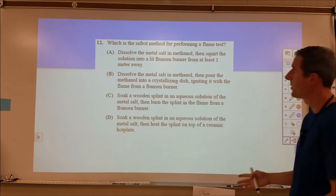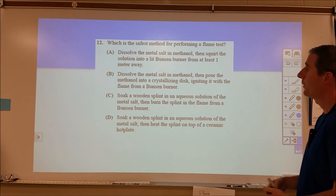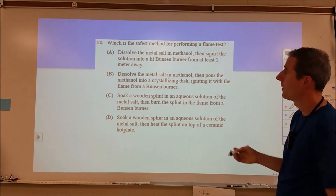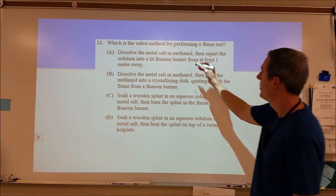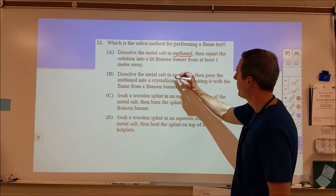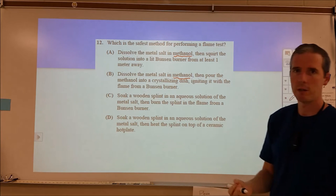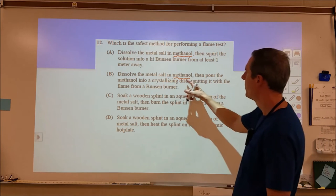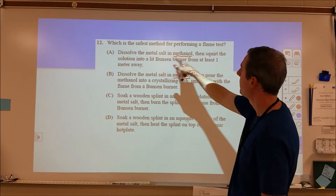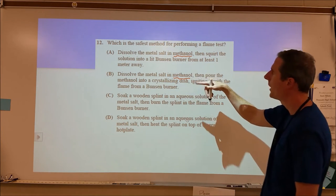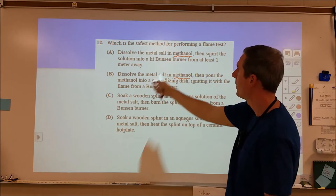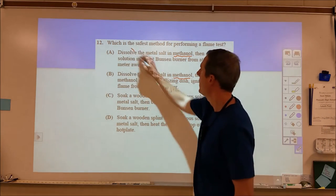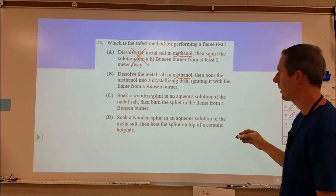Number 12, what's the safest method for performing a flame test? Some of these are just weird. So in general, be very skeptical of methanol for safety because methanol is probably the number one accident in high school chemistry labs. So that's something you really don't want to do. In particular, you don't want to squirt methanol into a Bunsen burner from a meter away. That's a bad idea. That's going to create a flame leading back into your container, which can cause an explosion. So A should be the obvious choice not to pick.